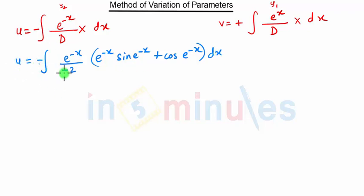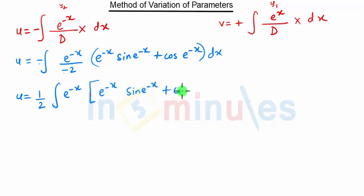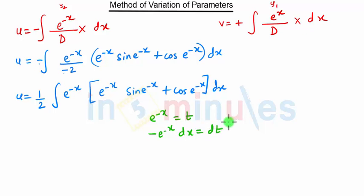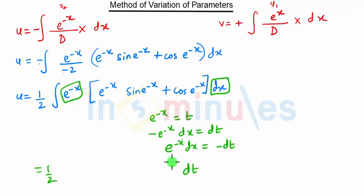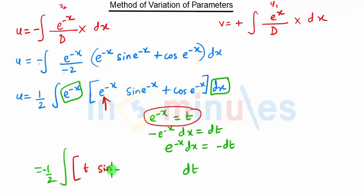The two minus signs become plus, giving u = (1/2)∫e^(-x)·e^(-x)(sin(e^(-x)) + cos(e^(-x)))dx. Since e^(-x) repeats, we substitute t = e^(-x). Differentiating: -e^(-x)dx = dt, so e^(-x)dx = -dt. Substituting, the expression becomes -(1/2)∫t(sin t + cos t)dt. The integration of e^(-x) terms becomes t·sin(t) + cos(t), giving the new integral in terms of t.